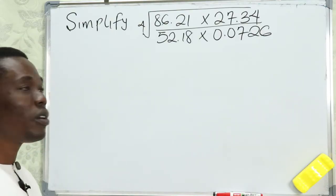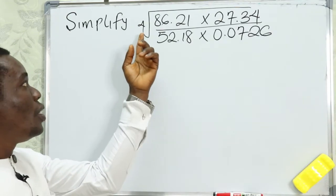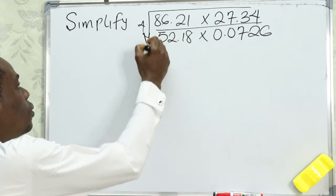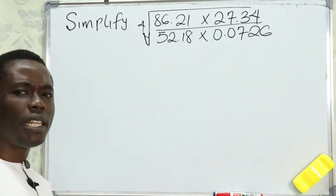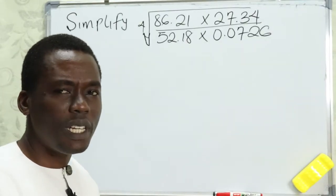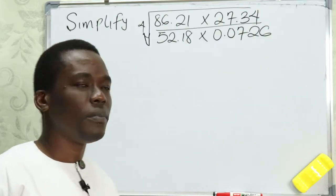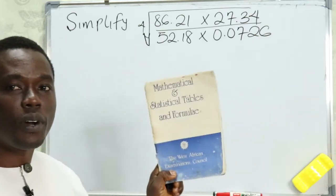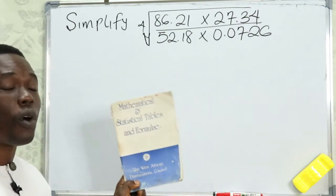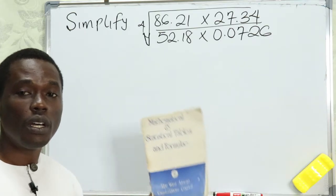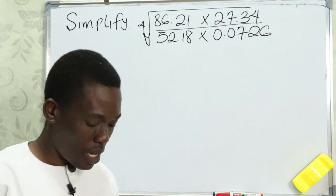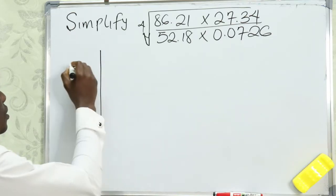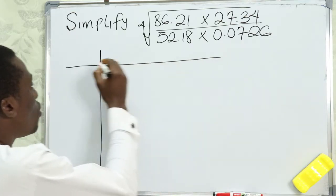So when you are asked to evaluate, you should know that you are going to use the logarithm table. This fourth root is for the whole fraction. We will solve this using the log routine, and here is the four-figure table which we are going to use to solve this question.